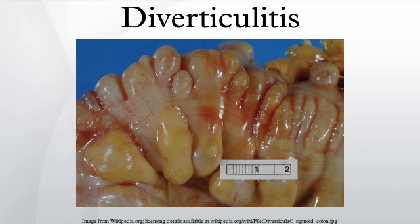Foods such as seeds, nuts, and corn were, in the past, thought by many healthcare professionals to cause or worsen diverticulitis. However, there is no evidence that suggests the avoidance of nuts and seeds prevents the progression of diverticulosis to an acute case of diverticulitis. It appears that a higher intake of nuts and corn could in fact help to avoid diverticulitis in adult males.